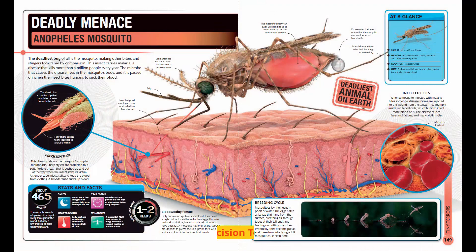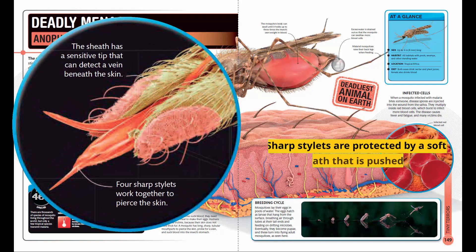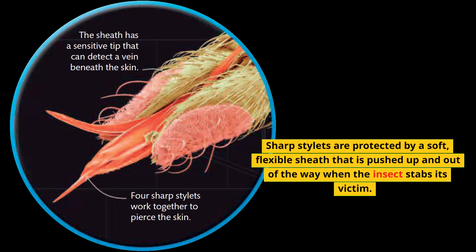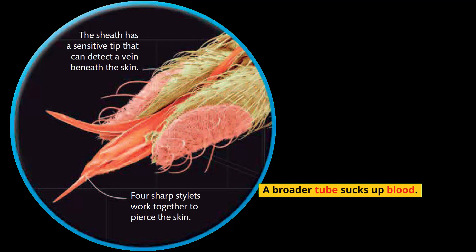This close-up shows the mosquito's complex mouthparts. Sharp stylets are protected by a soft, flexible sheath that is pushed up and out of the way when the insect stabs its victim. A slender tube injects saliva to keep the blood from clotting, while a broader tube sucks up blood.